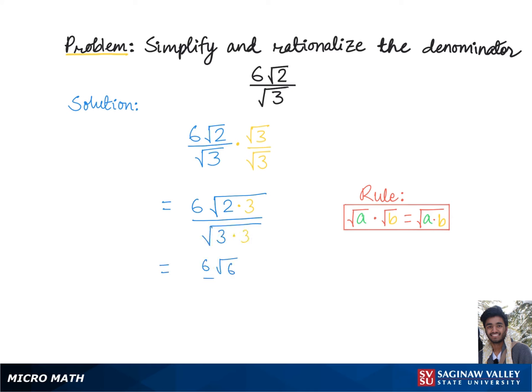This is equal to 6√6 over √(3²), and the square root of 3 squared is simply 3. This 3 divides 6 to give 2, so we are left with 2√6, which is the final answer.